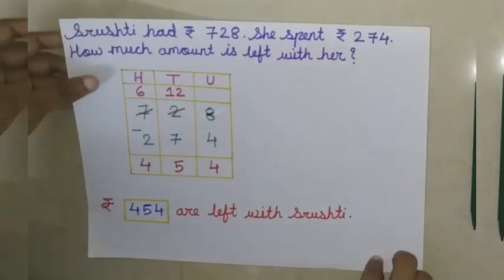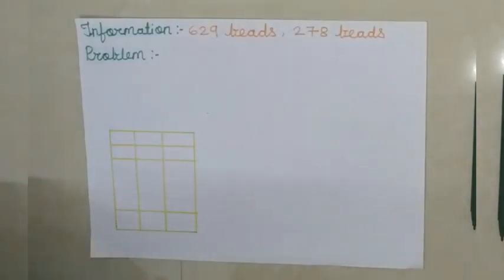Here we learned that the questions were ready for you. We only arranged the numbers and we did the subtraction. But now here you have to make your own word problem. Now children, you can make another word problem also. But for example, I am giving you how to make. Just see here. Your information is 629 beads, 278 beads. You have to make a word problem.